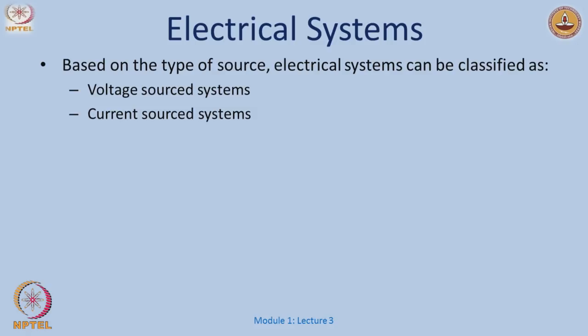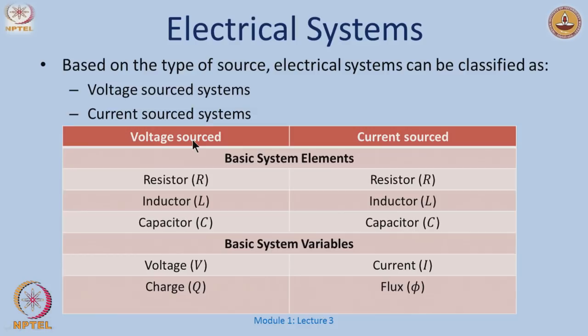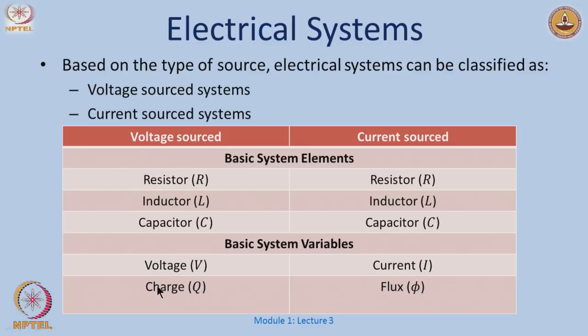In electrical systems, based on the type of source, we could classify systems either as voltage controlled or current controlled. In a voltage controlled system or circuit, my basic system variables are the voltage and the charge. We will see why this is true — why the voltage and the charge, and not voltage and current directly. The three basic elements we know from circuits are the resistor, inductor, and capacitor, and we will restrict ourselves to linear elements.